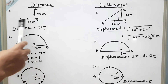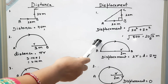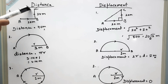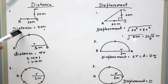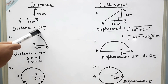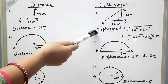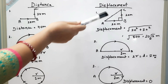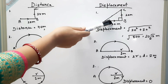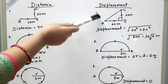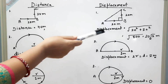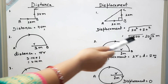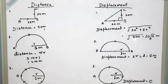In the first case, a particle starts from A and reaches C, so the total path length is the distance, which is 40 meters. For displacement, since it is the minimum distance between the initial and final position, and it forms a right-angle triangle, we use the Pythagorean theorem. The displacement works out to 20 root 2 meters.